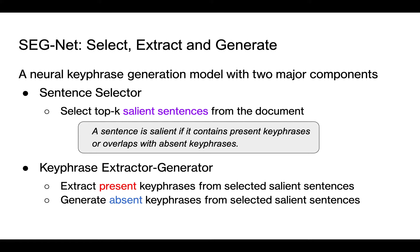To address these challenges, we propose in this work a novel neural keyphrase generation framework, SIGNET. SIG means select, extract, and generate. As its name indicates, this model contains two major components.